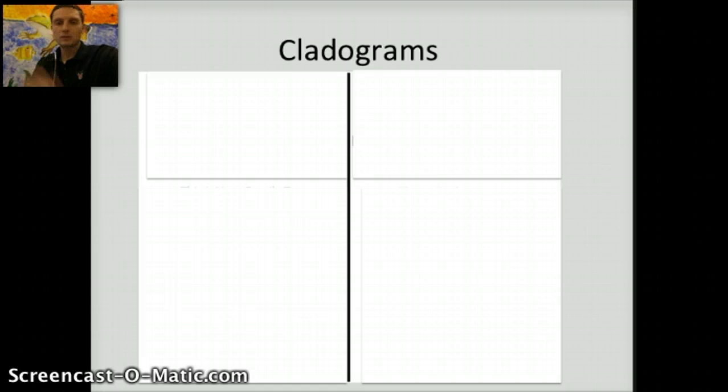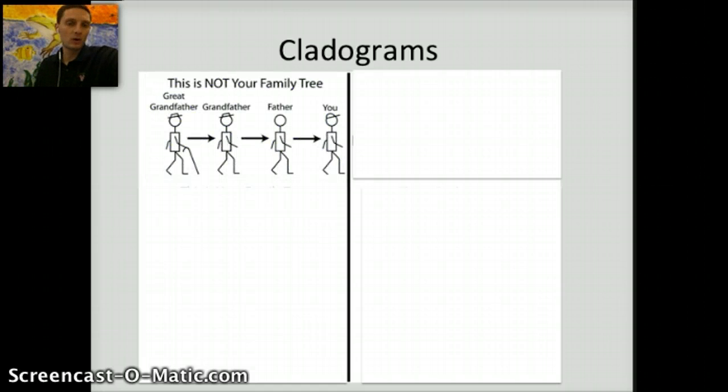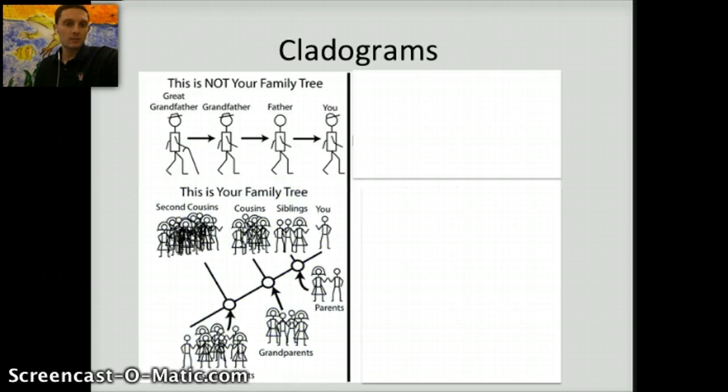I'm going to assume that what you composed was not something like this, where we've got great grandfather, grandfather, father, and you. This is probably not what your family tree would look like. Depending on your background, you might have done something that looked similar to this, where we've got great grandparents, grandparents, parents, siblings, and you, branching off to second cousins and cousins. Maybe your family tree looked more like a pedigree.